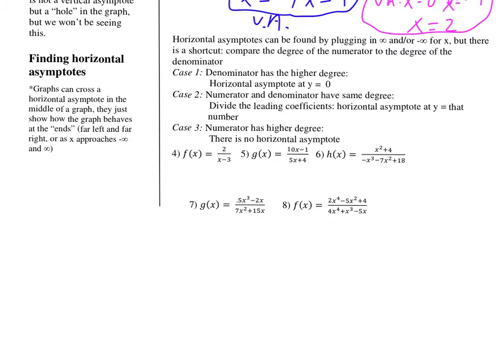Next up: horizontal asymptotes. This is a much different process. In calculus you plug in infinity for x, but here we just look at three cases. Compare the degree of the numerator to the degree of the denominator. If the denominator's degree is higher, horizontal asymptote is at y equals 0. If they have the same degree, divide the leading coefficients — horizontal asymptote at y equals that number. If the numerator has a higher degree, there's no horizontal asymptote (there's a slant asymptote, but we won't cover that).